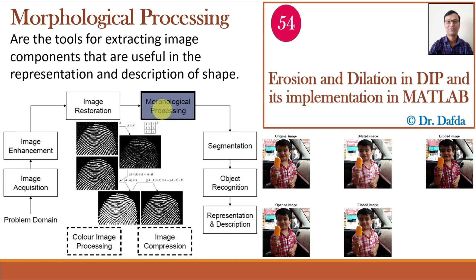The next step is morphological image processing, which is a branch of image processing that focuses on the analysis and manipulation of image structures based on the shape and form of objects within the image. It is particularly useful for object extraction, image enhancement, noise reduction, and feature detection in binary and grayscale images. It is inspired by mathematical morphology and operates on binary or grayscale images using two fundamental operations: erosion and dilation.